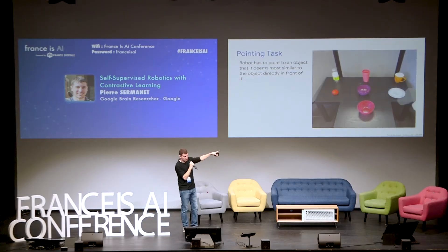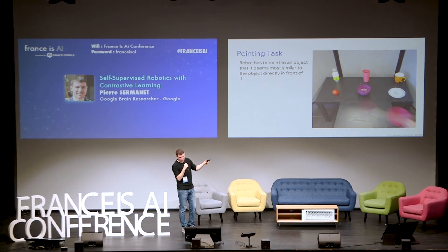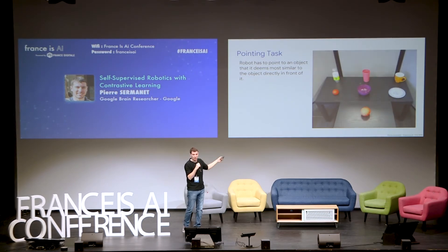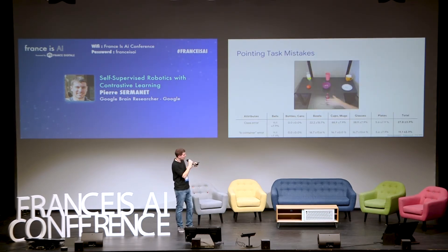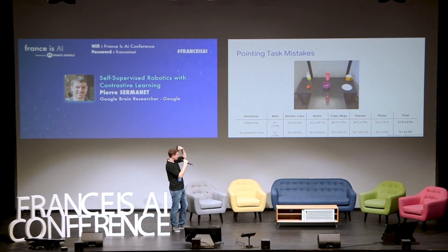We evaluate the quality of our embeddings in a pointing task, where the robot is shown an object and has to point to the object it thinks is the most similar. It's able to do that task with pretty good accuracy, even though it was never given any labels for these objects and hasn't even seen these particular objects before. We do observe some mistakes, such as confusing a mug and a ball, but these mistakes are often somewhat sensible — they're not catastrophic, because the model has a continuous understanding of things.